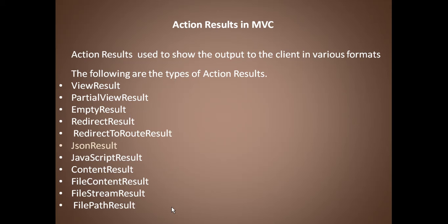What is JSON result type? JSON result type is nothing but it returns the JSON output to the client. JSON stands for JavaScript Object Notation — it is nothing but a simple text format file.